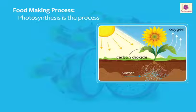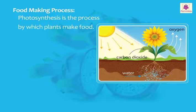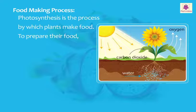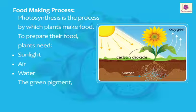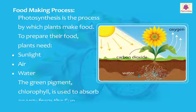Photosynthesis is the process by which plants make food. To prepare their food, plants need sunlight, air, and water. The green pigment chlorophyll is used to absorb energy from the sun.